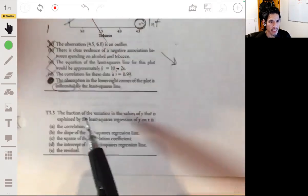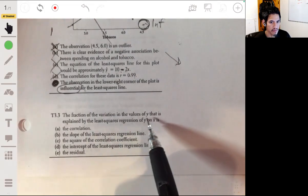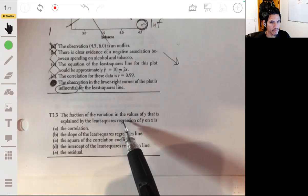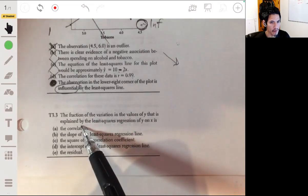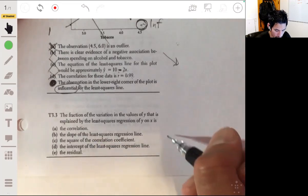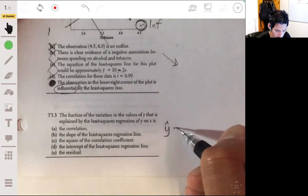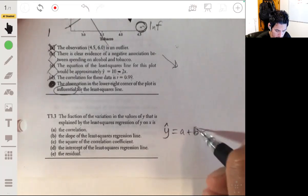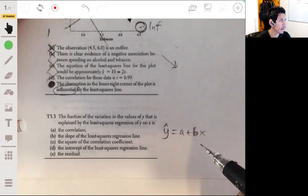All right, number three. The fraction of the variation in the values of y that is explained by the least squares regression line of y on x is: correlation? Nope. The slope of the least squares regression line? Nope. Slope—remember, we have our general equation: y-hat equals a plus b times x.